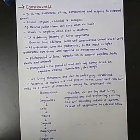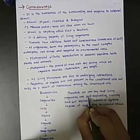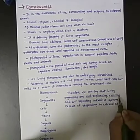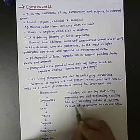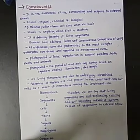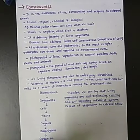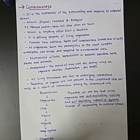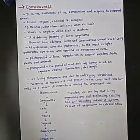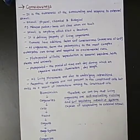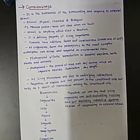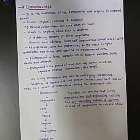Therefore, we can say that living organisms are self-replicating, evolving, and self-regulating interactive systems. Because we have interactions within ourselves, adaptation, response, awareness, and consciousness — which makes us capable of responding to external stimuli. All these defining properties are present in living things: self-replicating, evolving, and self-regulating interactive systems.